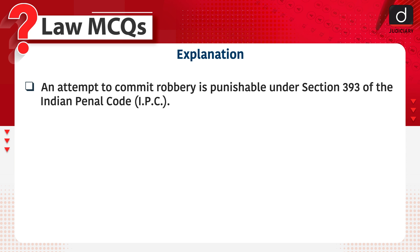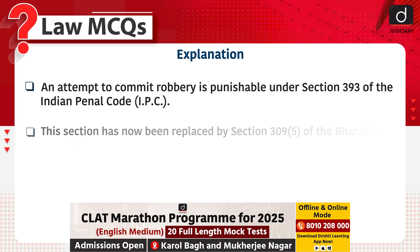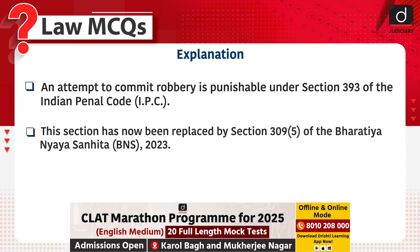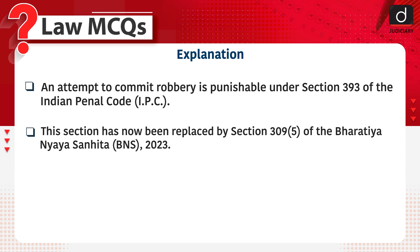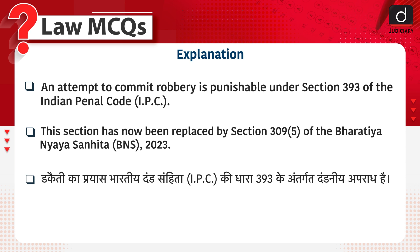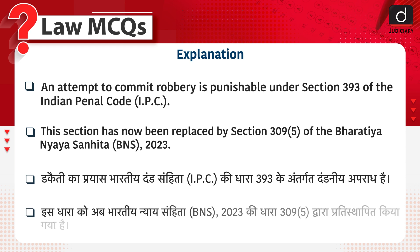The correct answer is option B, Section 393. This section has now been replaced by Section 309, clause 5 of the Bhartiya Nyaya Sahita 2023. Dakaiti ka prayaas Bhartiya Dand Sahita ki dhara 393 ke antargat dand niya apradh hai. Is dhara ko ab Bhartiya Nyaya Sahita 2023 ki dhara 309(5) dwara prathischthapit kiya gaya hai.